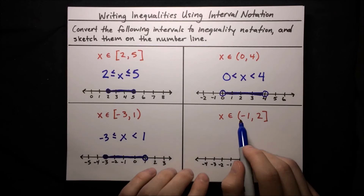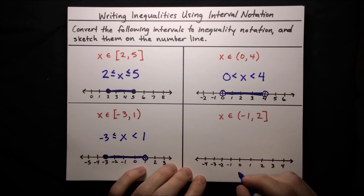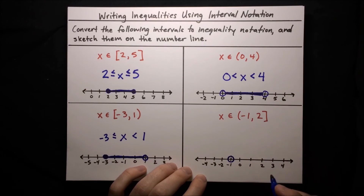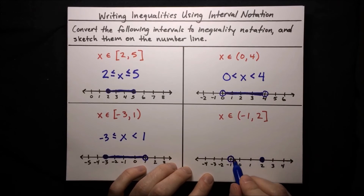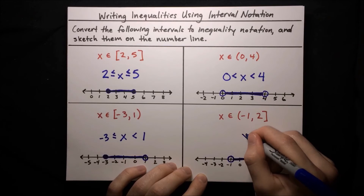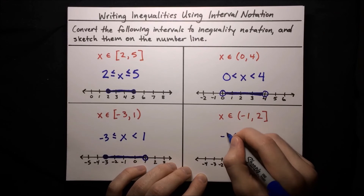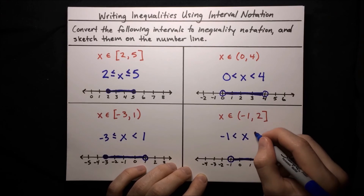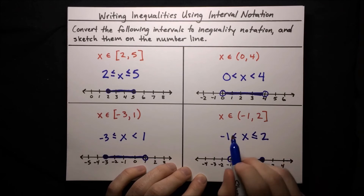The last mixed example is the interval (-1, 2]. The endpoint at -1 has a parenthesis, so that's an open circle, and the endpoint at 2 has a bracket, so that's a closed circle. x is in that segment. Writing the inequality: the left endpoint -1 has an open circle, so x must be strictly greater than -1. The right endpoint 2 has a closed circle, so x is less than or equal to 2. The inequality is -1 < x ≤ 2.